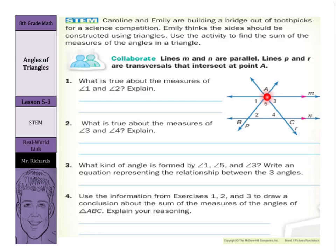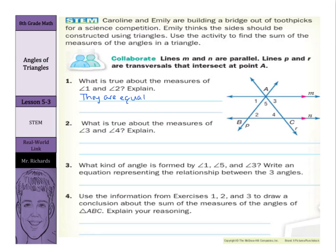What is true about the measures of angle 1 and angle 2? Well, if M and N are parallel lines and P is the transversal, both angles 1 and 2 are on the inside of the parallel lines, on opposite sides of this transversal — one's on the left, one's on the right. We can say that they are equal because they are alternate interior angles.